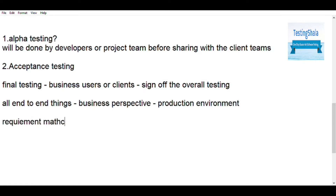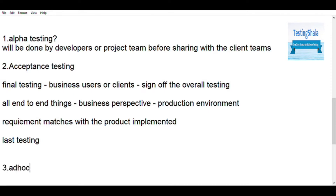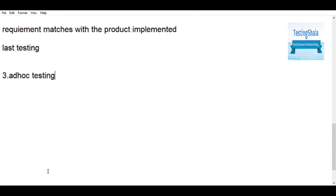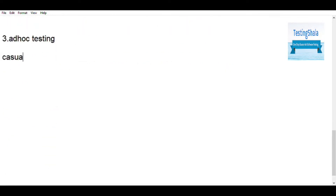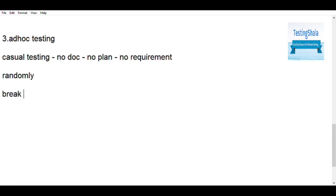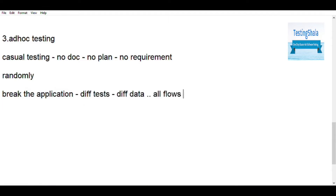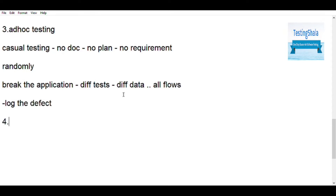Ad hoc testing — the name itself suggests it is a casual way of testing things where we do not have any documentation, we do not have any plan. There are no requirements, no test cases — nothing. The main goal here is how we can go and break the system by doing random testing, by putting a lot of different kinds of data to break the application, and then log the defect.